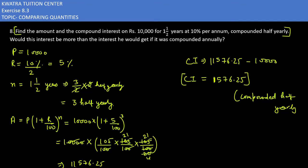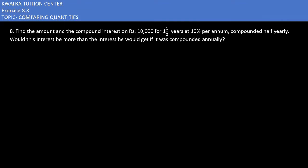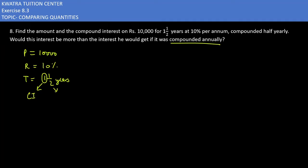Now for the annual calculation — the interest is different because the time period is a mixed fraction. For annual compounding, one full year is calculated using compound interest, and the remaining half year is calculated using simple interest. The amount formula is Principal × (1 + r/100) raised to n.